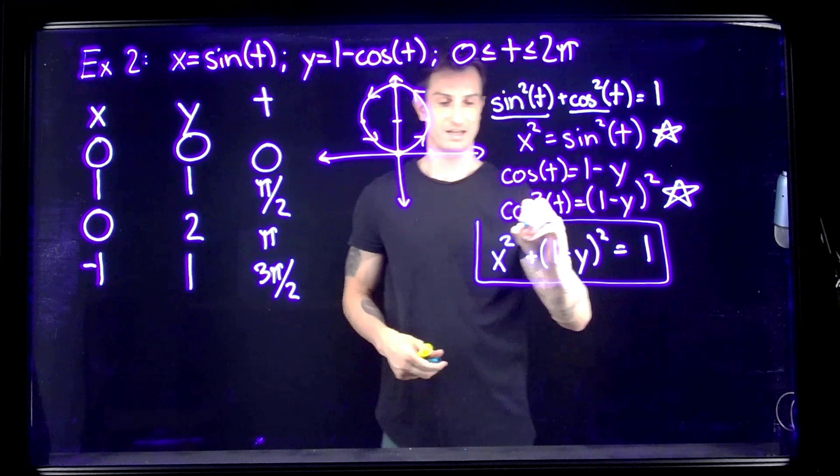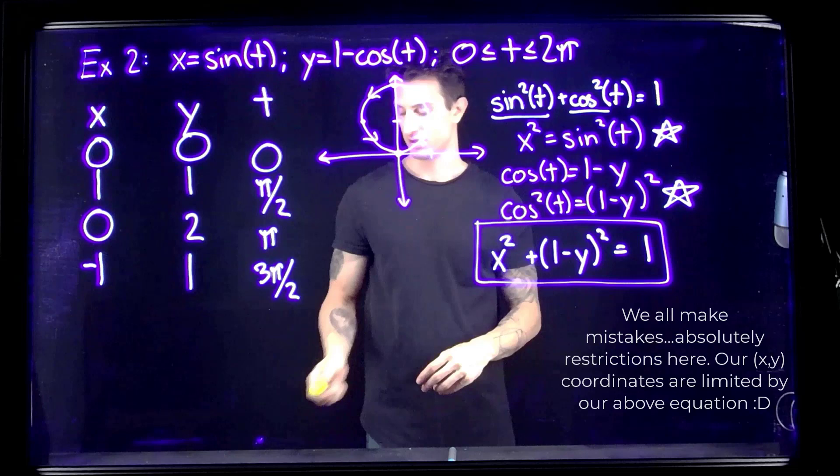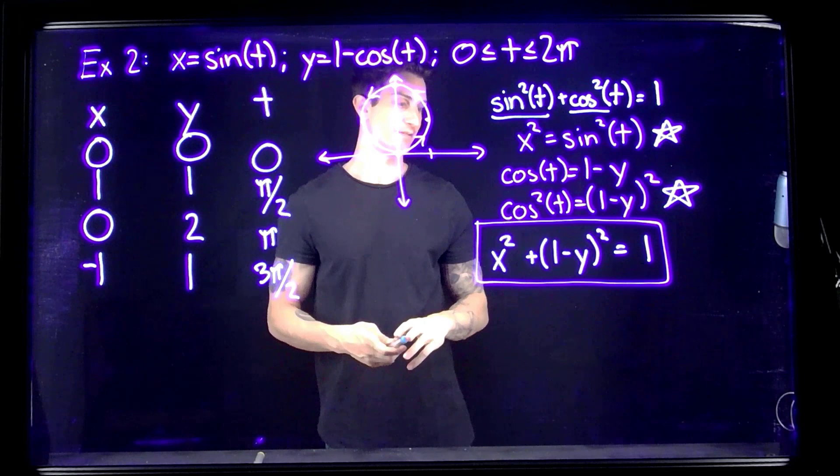We need to ask ourselves if there are any domain issues or restrictions. In this case there are none — we can plug in whatever we want. We will be restricted to the x,y points along that circle, but that's about it. That is all for Example 2.